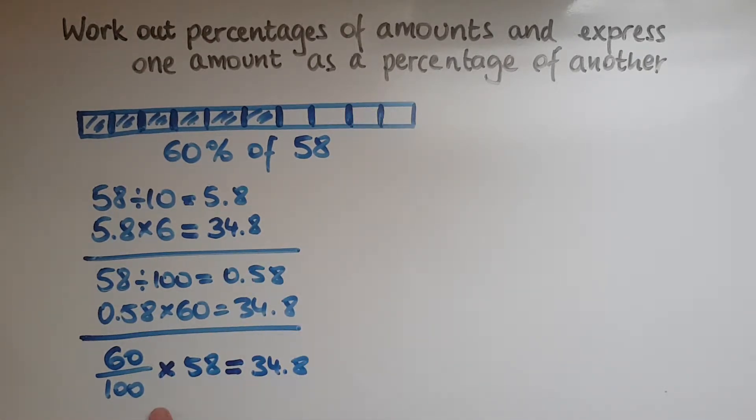And very close link to this is another way of working this out. Because 60 out of 100, we should know it's 60%. And as a decimal, we write it 0.6 or 0.60.